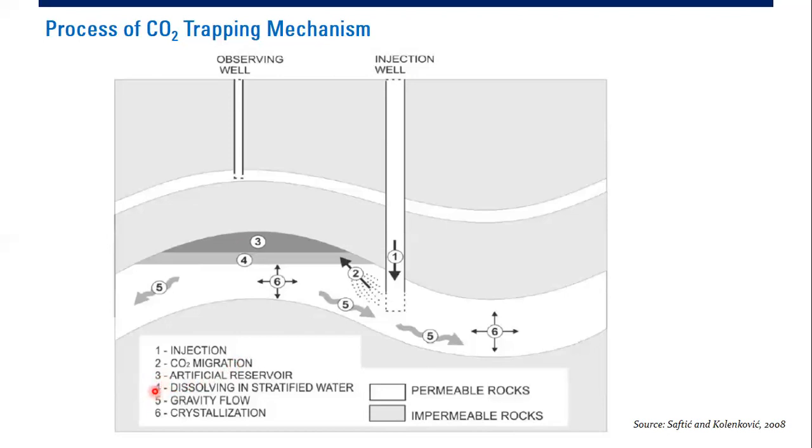And then at number four, you can see dissolving in stratified water. So below the oil zone or below the depleted gas zone, we can have water zone, or in this picture we call it stratified water, or maybe bottom water or maybe aquifer. In that water zone, the CO2 can dissolve. The CO2 will be dissolved and it will trap some of the CO2.